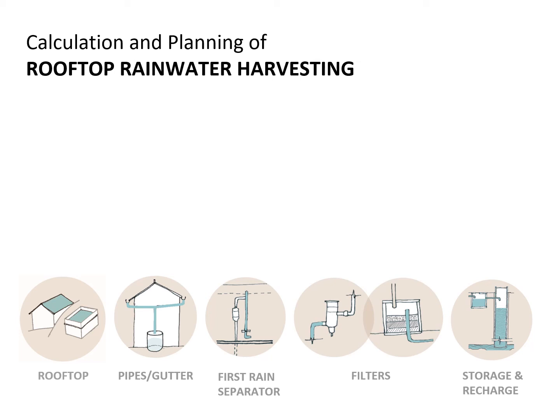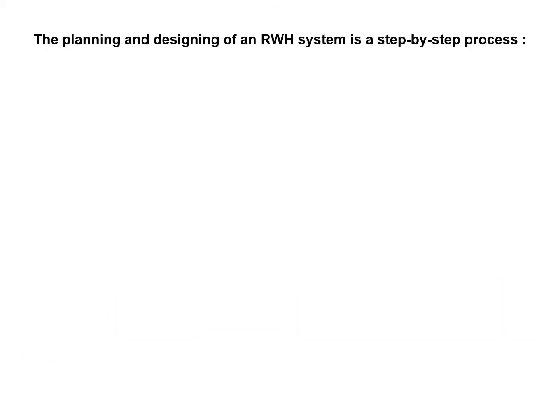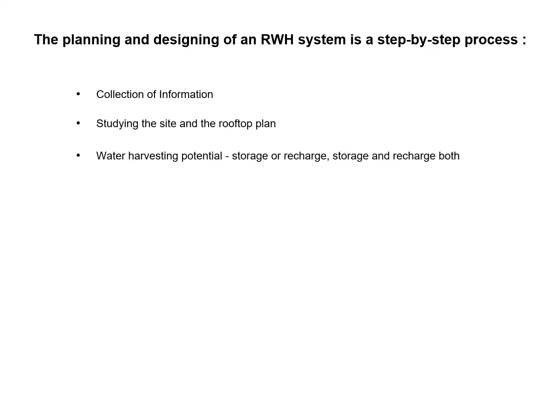Now that we have understood the process, it is necessary to know the planning and calculation to design the system better. It is a step-by-step process. First, we have to collect all the information. Second, we have to study the site and the roof plan. Third, we have to check the water harvesting potential — whether we can store the water, recharge it, or do both. Fourth, we have to calculate the capacity and see the location of the structure. Fifth, we have to prepare the budget and estimate it.